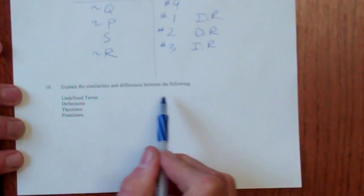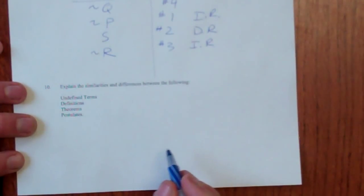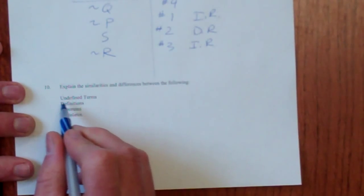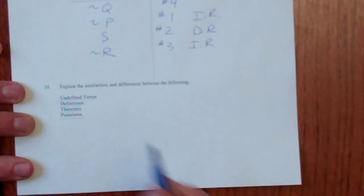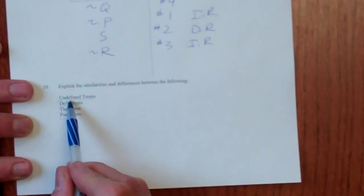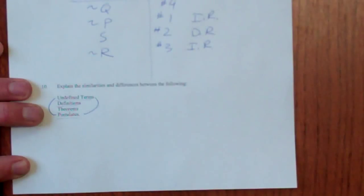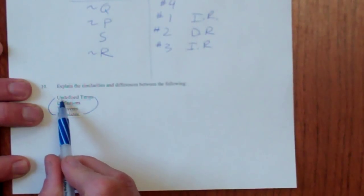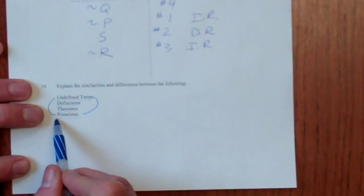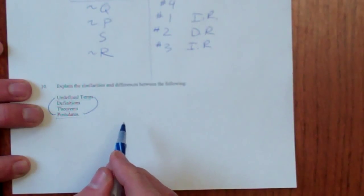Finally, explain the similarities and differences between the following. Okay, again, you can look these up in the book rather than listen to me write down things slowly. But basically, undefined terms are like postulates. These are things that you just start with. You cannot define an undefined term. You cannot prove a postulate. So they're similar.